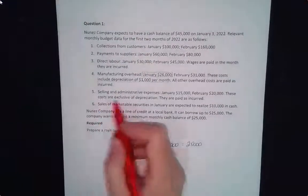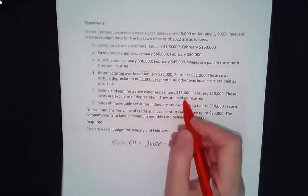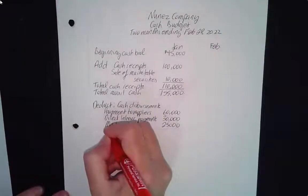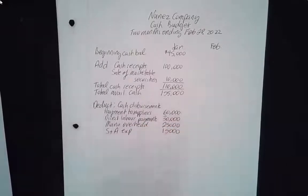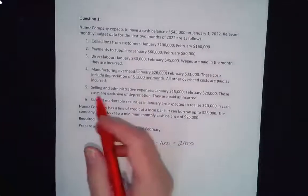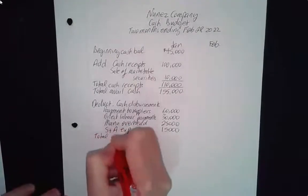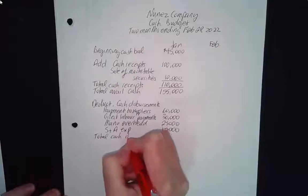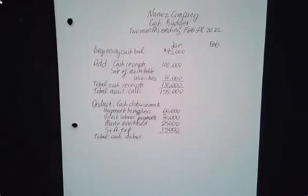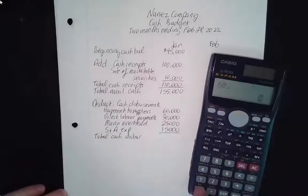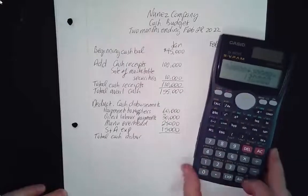Selling and administrative expenses for January are $15,000. There's no depreciation included, so we can use the full $15,000. That's all the disbursements. Total cash disbursements add up to $130,000.